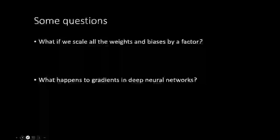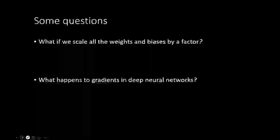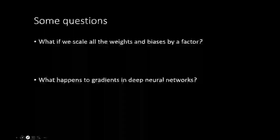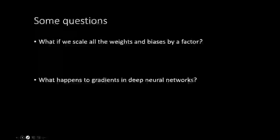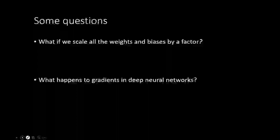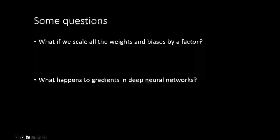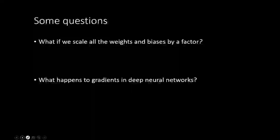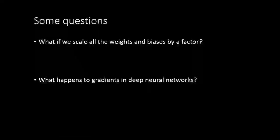With this, you have a good idea of how backpropagation works for neural networks with vector outputs and multiple neurons per layer. Now let's talk about what happens when we string many layers together. There are certain ambiguities in deep neural networks that need to be controlled. The first is that we can generally scale all the weights and biases by a factor without even having a qualitative change in the output.